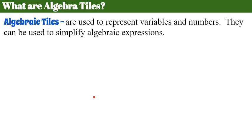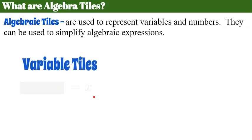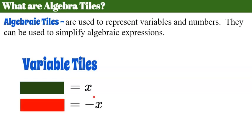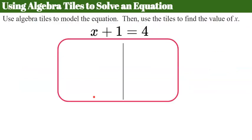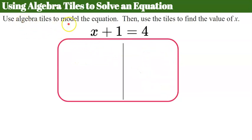We're going to use algebra tiles first to model how to solve an equation. Algebra tiles are used to represent variables and numbers, and they can be used to simplify algebraic expressions. Variable tiles: the long green represents x, and the long red represents negative x. We have constant tiles: a little yellow square represents positive 1, and a red square represents negative 1. Here is my mat — this line represents our equal sign, so we're going to model one side equal to the other.